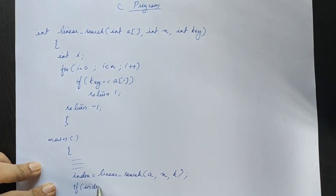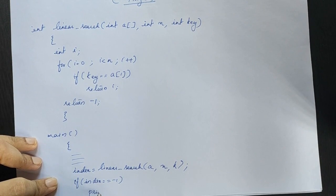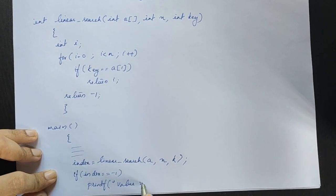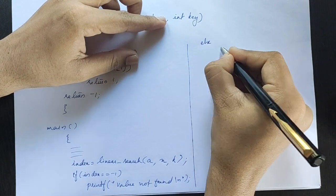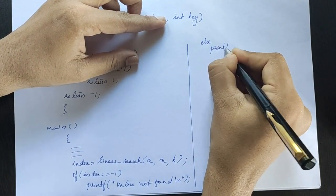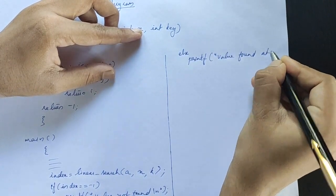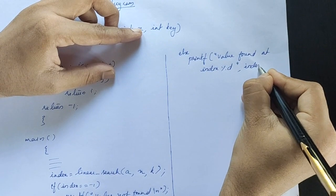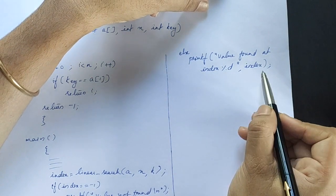If index is equal to minus 1, then print value not found.